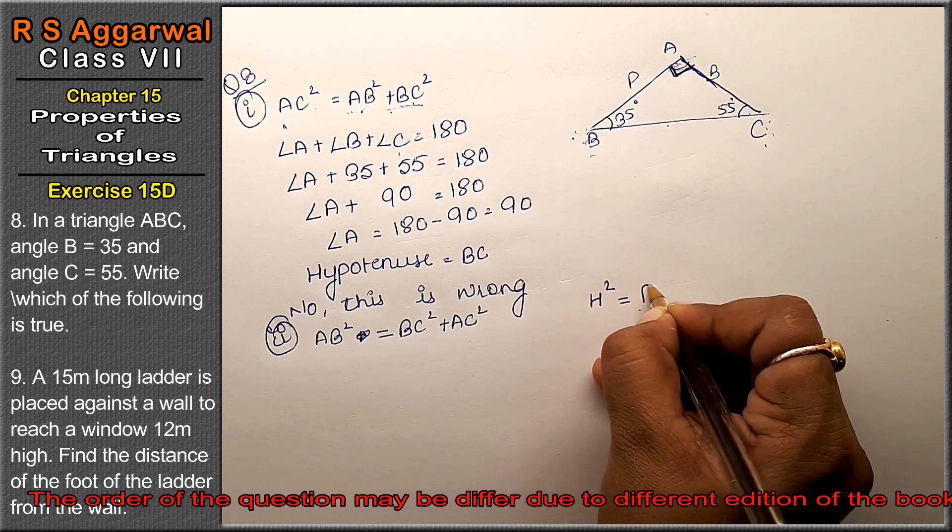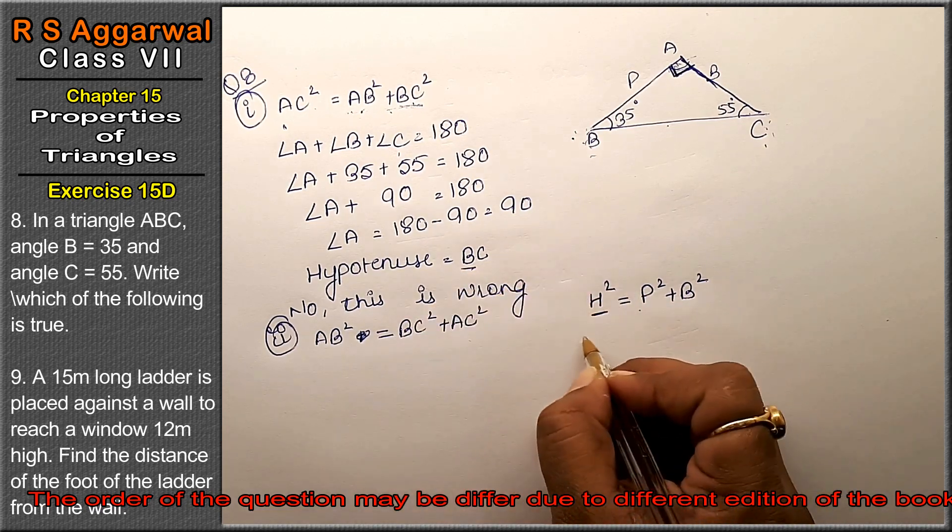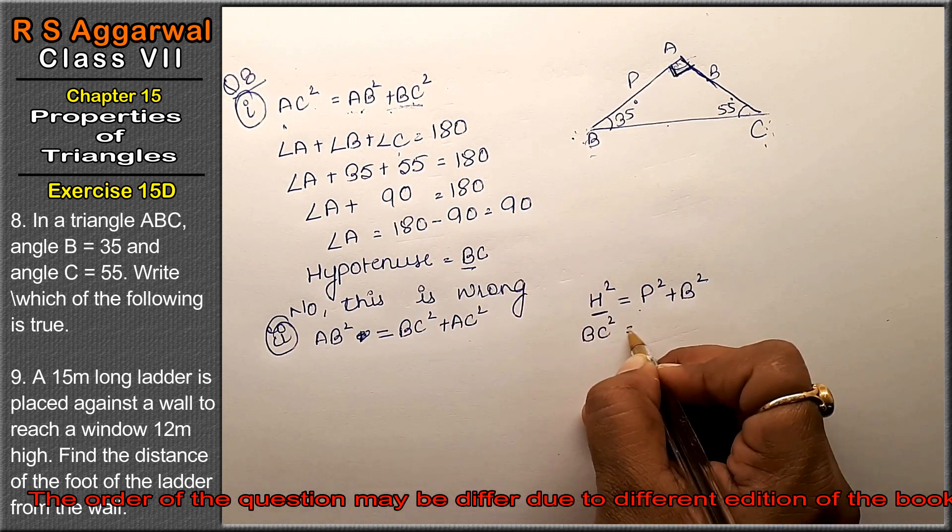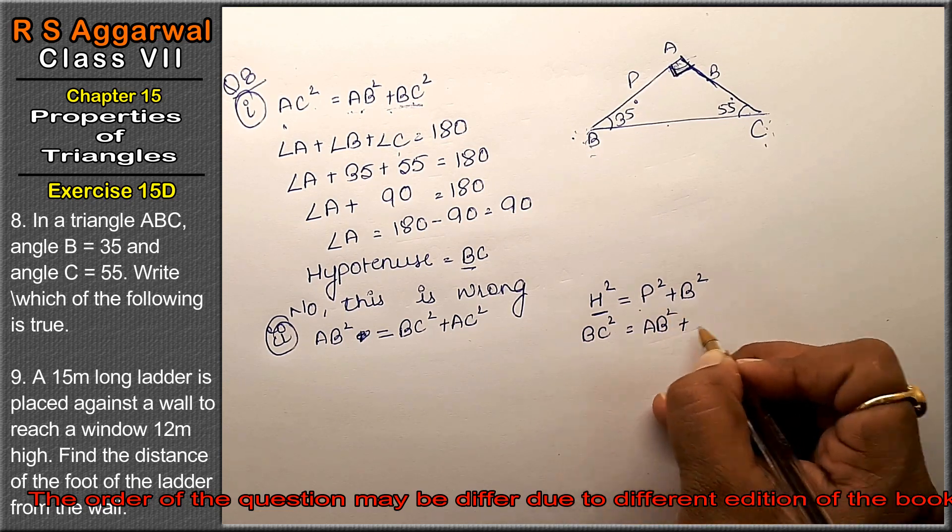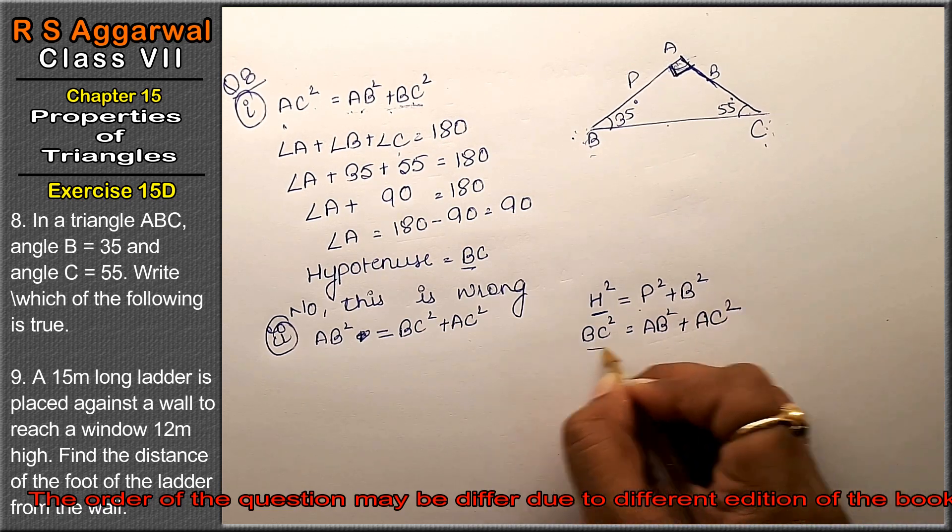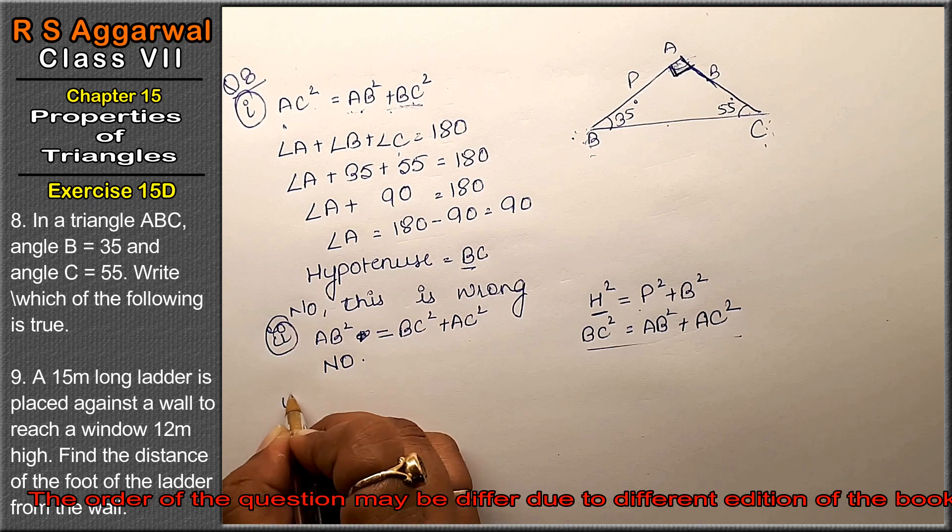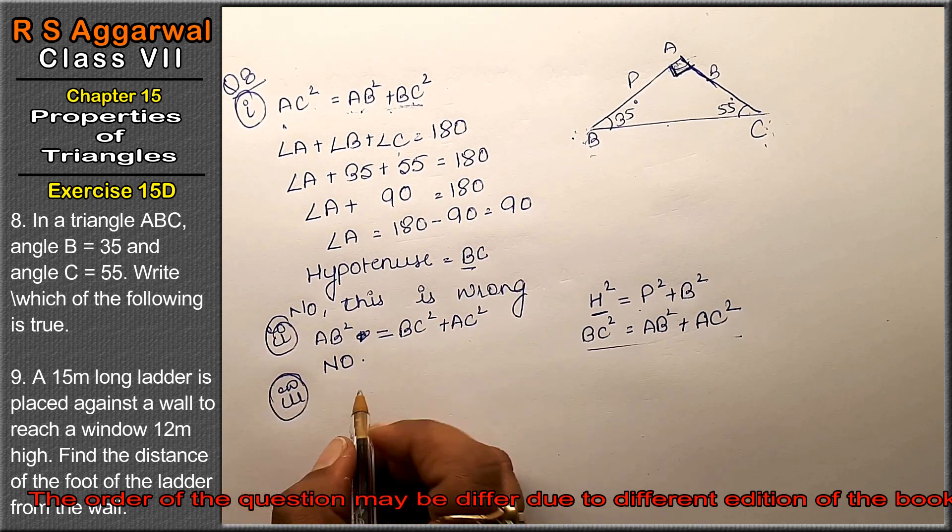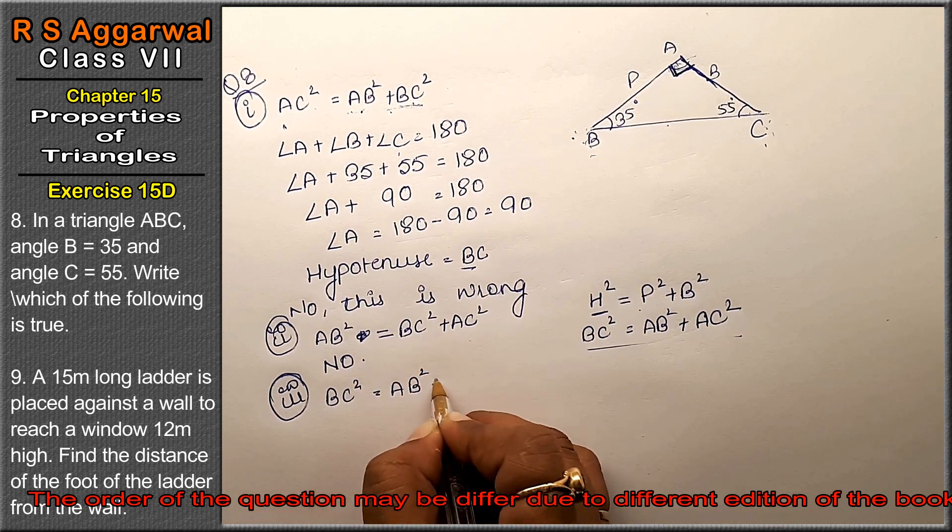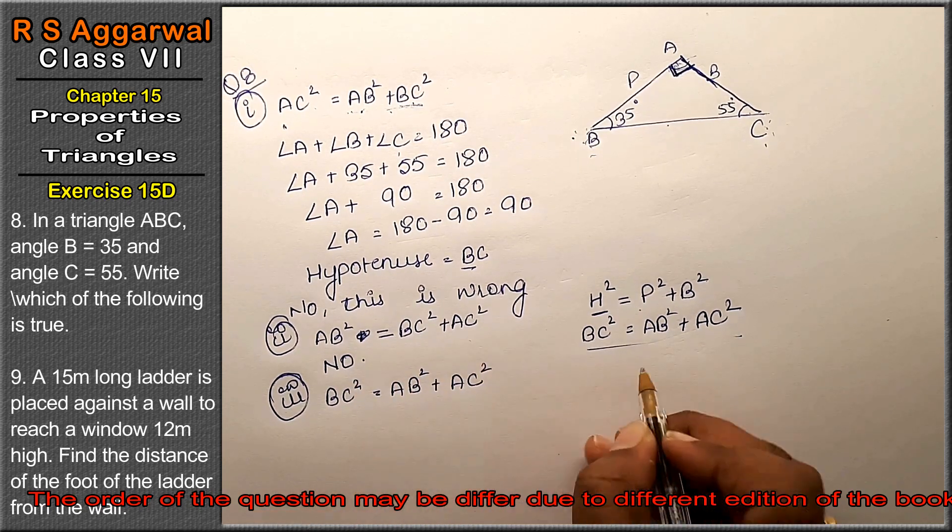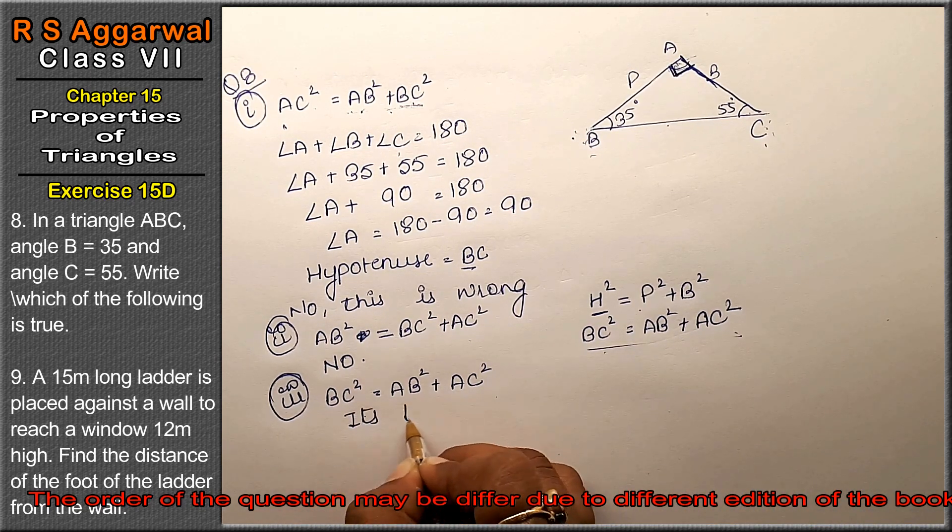Hypotenuse² = perpendicular² + base². Hypotenuse we've seen is BC, so BC² = AB² + AC². This is wrong, so no, it is false. And third is BC² = AB² + AC², same, then it is true.